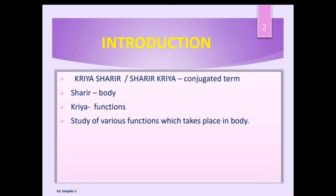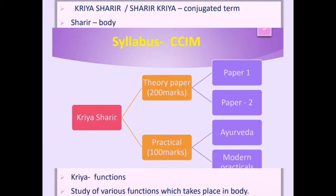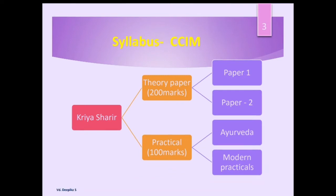Hence it is said that if you have thorough knowledge of first year subjects like Kriyasharira, Rachanasharira, Ashtangarudaya, and Padartha Vijnana, all these subjects act as a base for becoming a good Ayurveda Vaidya. Next, we will understand the syllabus of Kriyasharira. It has two sections: one is the theory paper and another is the practical paper. The theory paper is for 200 marks, subdivided into Paper 1 and Paper 2, each for 100 marks. The practical is for 100 marks, covering both Ayurveda and modern practical sections.